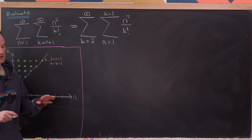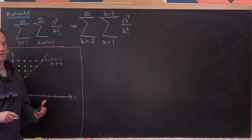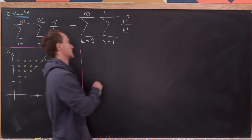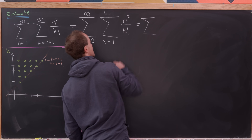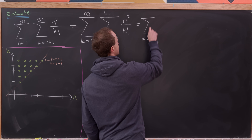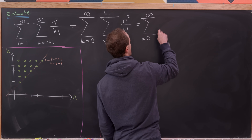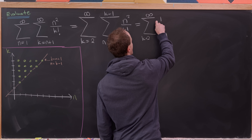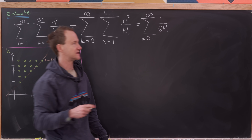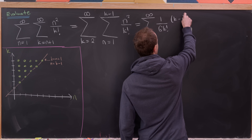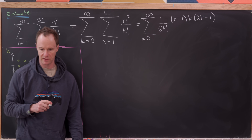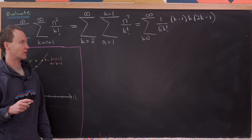The good news is we have a formula for the sum of the first k minus 1 squares. Since k factorial is a constant with respect to the inner sum, we can sum up those squares using a standard formula. So we get the sum as k goes from 2 to infinity of 1 over 6 times k factorial, times k minus 1 times k times 2k minus 1 — that's from the sum of squares formula.